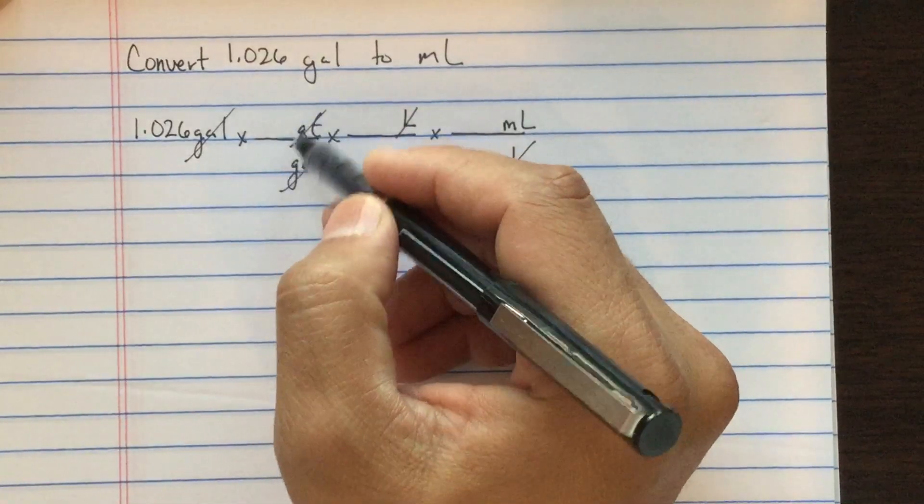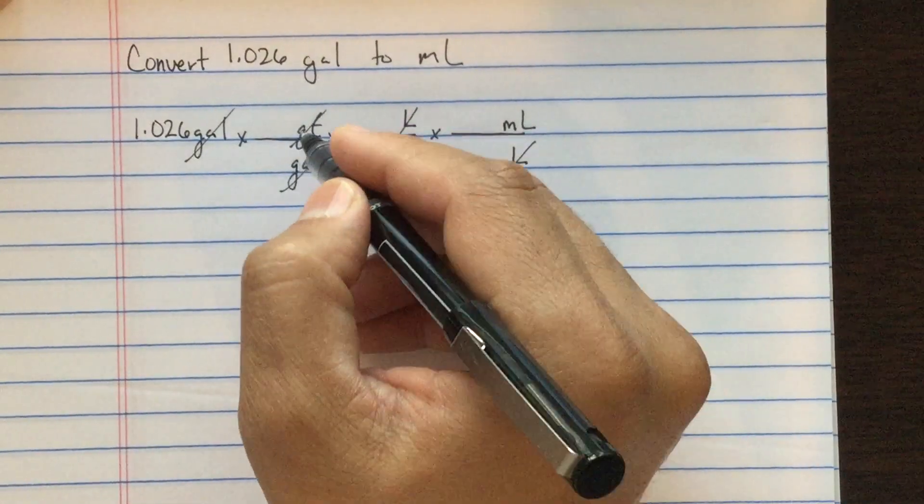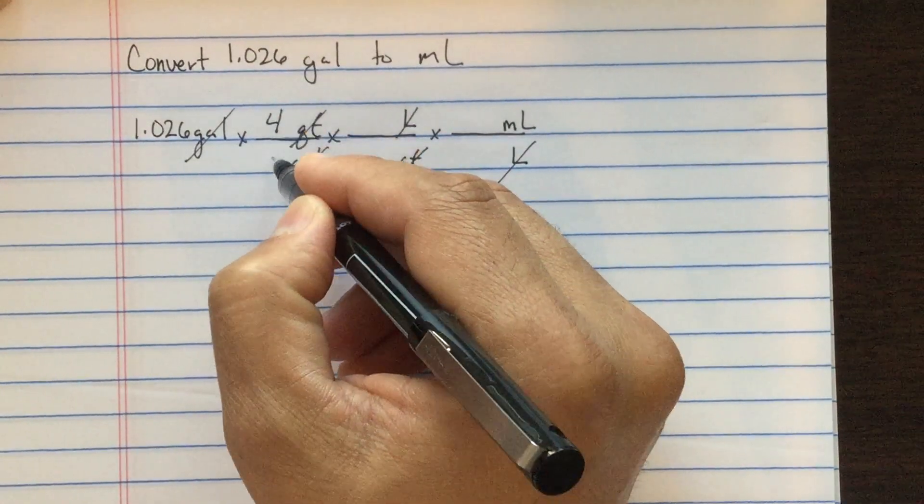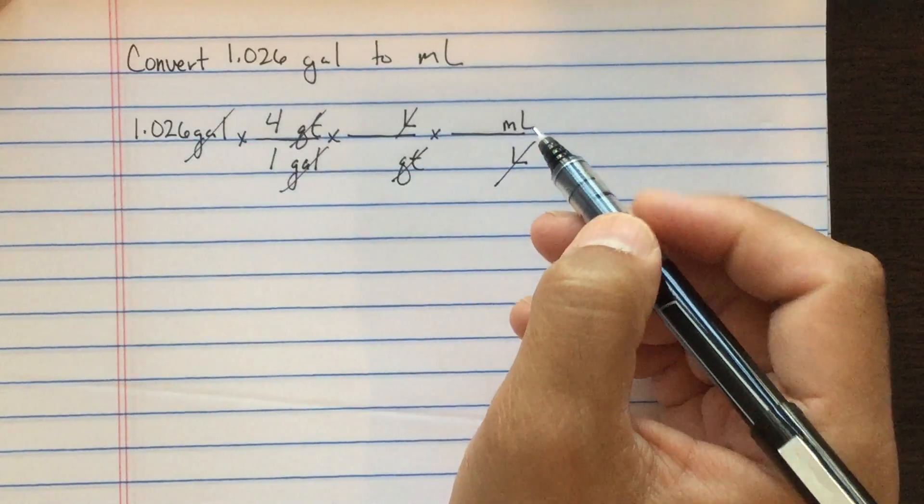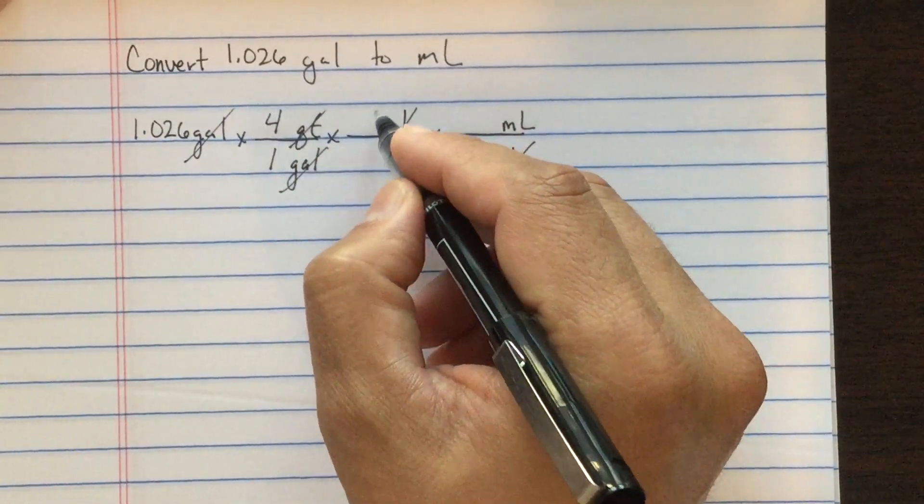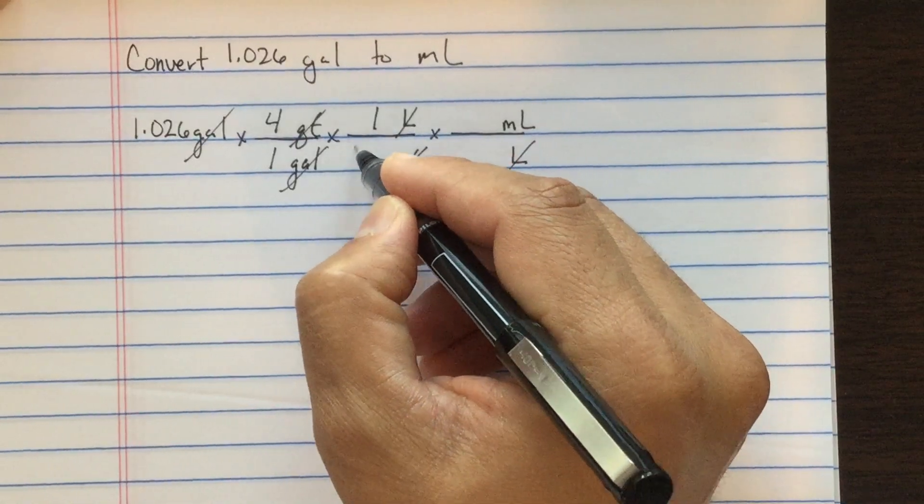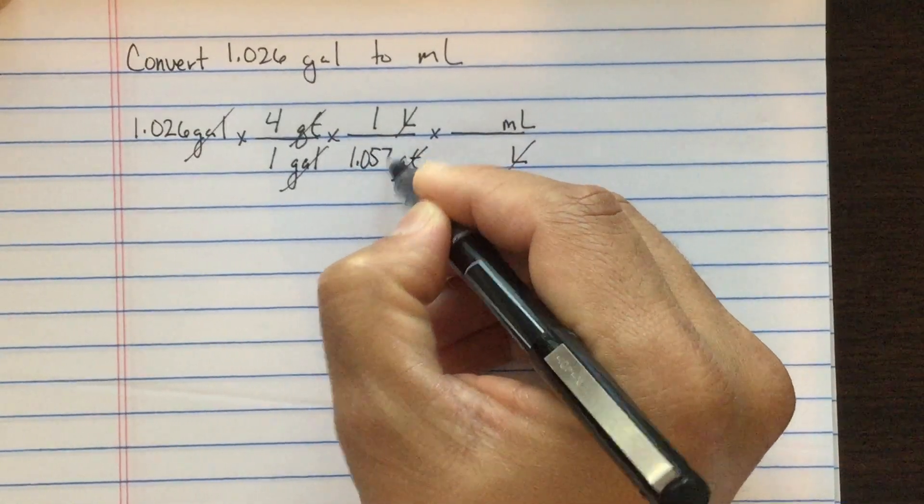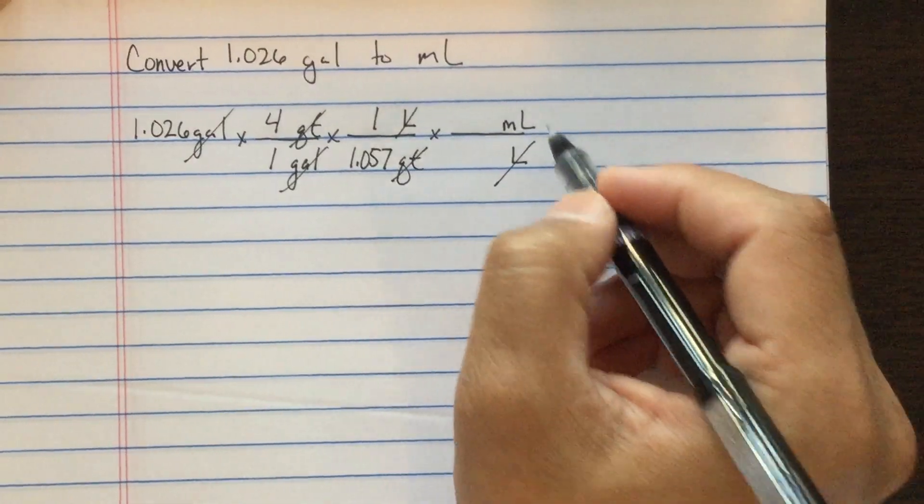The relationship between gallons and quarts: four quarts for every one gallon. The relationship between liters and quarts is one liter is equivalent to 1.057 quarts.